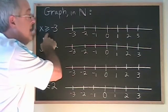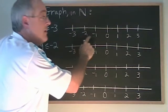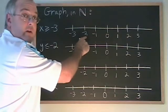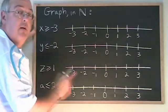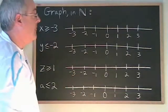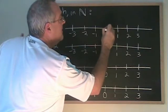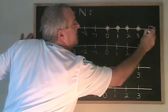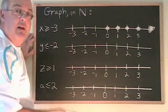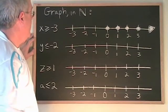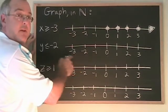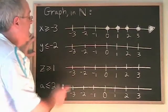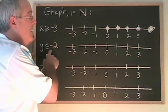x greater than or equal to negative 3 would seem to be these numbers going on and on in the positive direction, but be careful — this is in natural numbers. Natural numbers do not include negative 2 and negative 1. Even though they are greater than negative 3, they will not be part of the answer. The natural numbers that are greater than or equal to negative 3 start at 0 and include all of the positive natural numbers. y less than or equal to negative 2 would include numbers over here, but again, these negative numbers are not natural numbers, so there are no natural numbers that are less than or equal to negative 2. The answer is empty set.